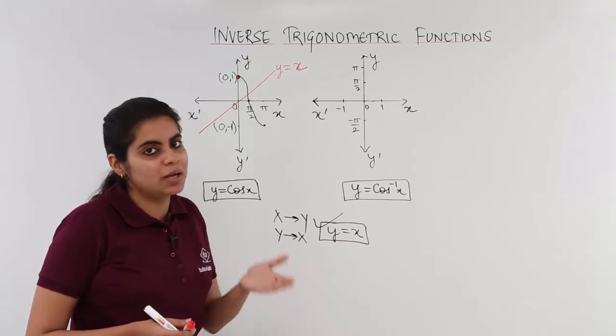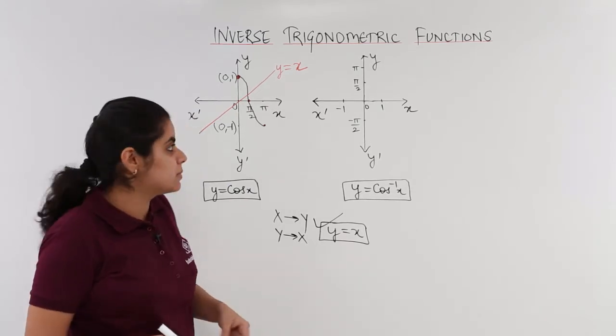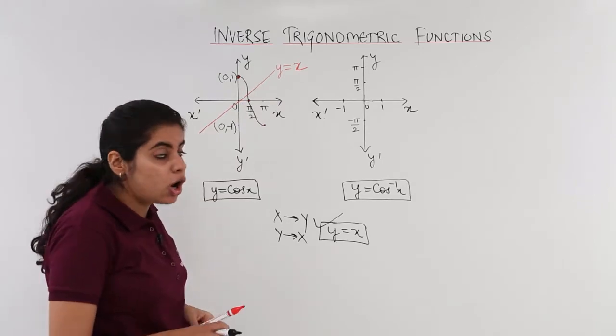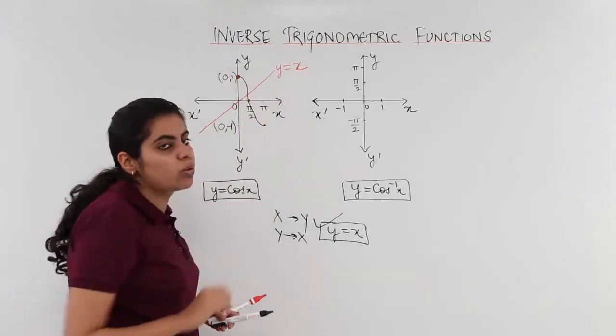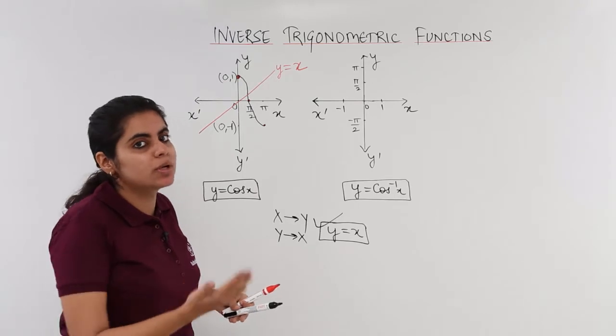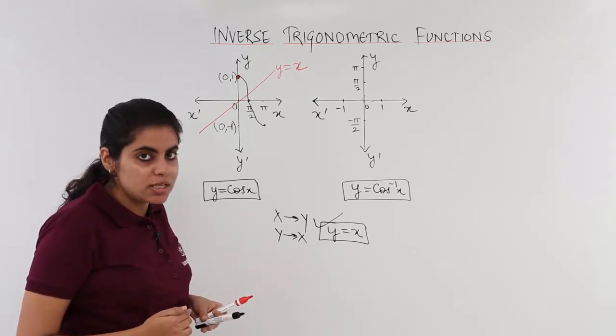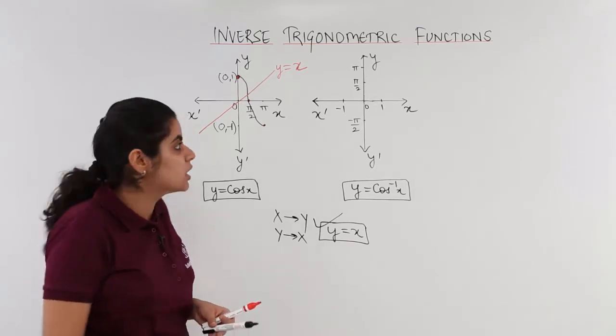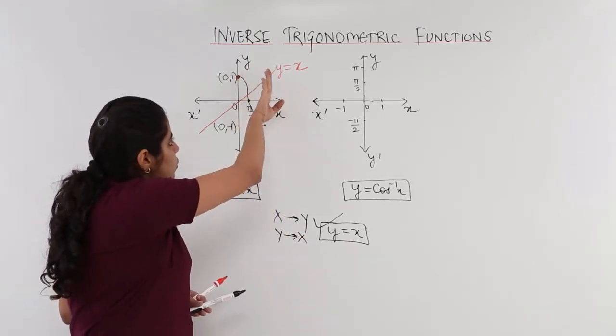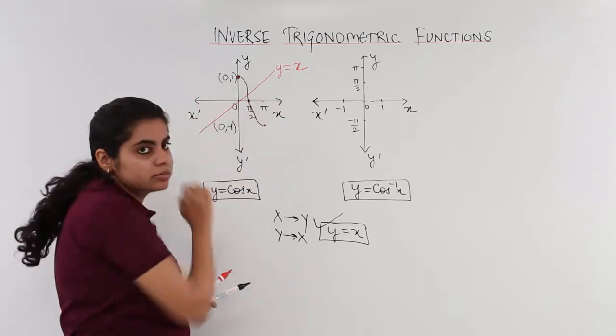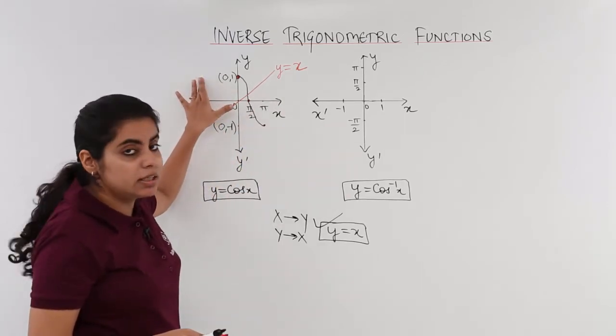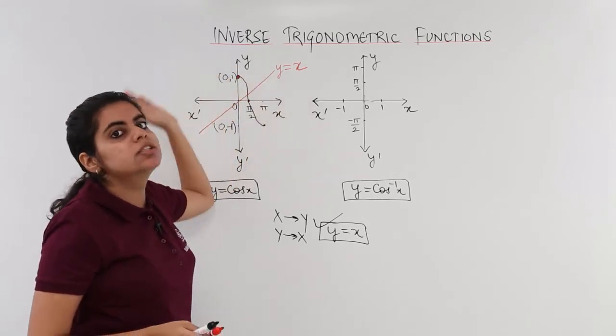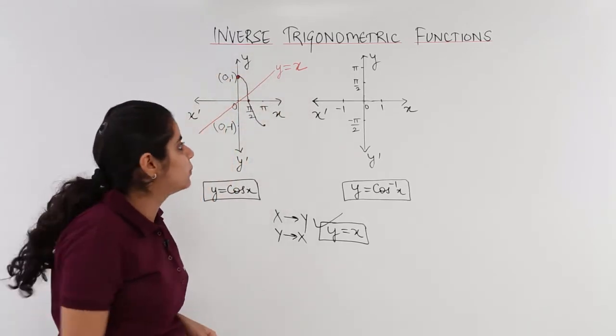Whatever is above becomes below. Whatever is below becomes above. 0 and 1 above on the side first quadrant will shift towards the left side. Because in mirror, left becomes right and right becomes left. So if it is on the first quadrant it should be somewhere here in the second quadrant.